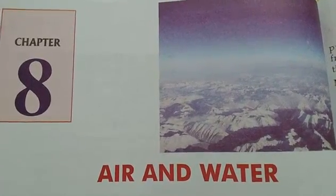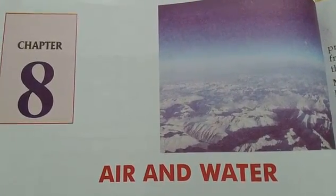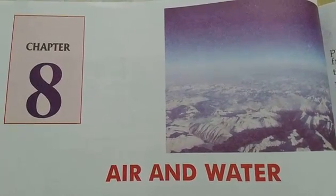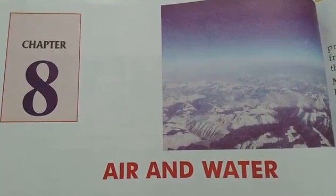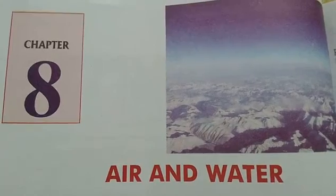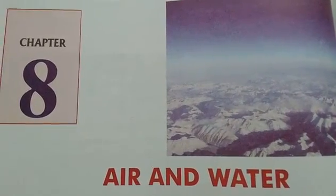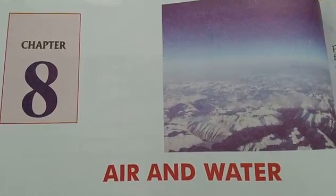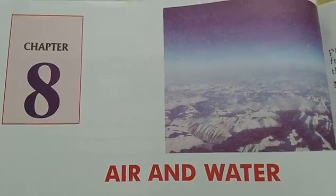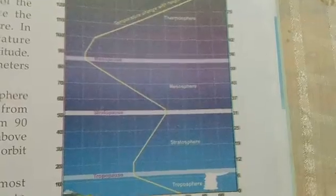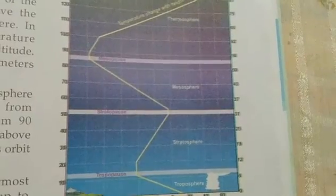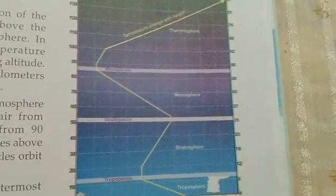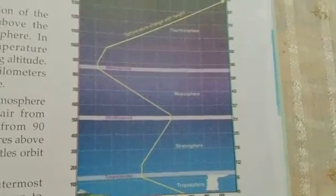What we learnt in this chapter? We learnt about atmosphere. Our earth is surrounded by air, and this layer of air that surrounds the earth is called the atmosphere. There are 5 layers of atmosphere: troposphere, stratosphere, mesosphere, thermosphere, and exosphere.